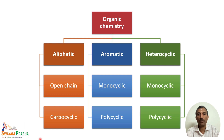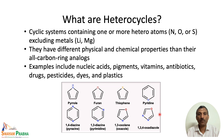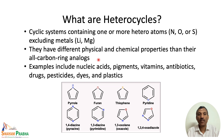Heterocyclic compounds have two major classifications: monocyclic and polycyclic — that is, single ring and multiple rings. Heterocycles are basically cyclic systems containing one or more heteroatoms. The heteroatoms we mainly deal with are nitrogen, oxygen, and sulfur. Other heteroatoms such as lithium, magnesium, silicon, selenium, and phosphorus are also known, but we will mainly focus on nitrogen, oxygen, and sulfur heterocycles. These compounds have different physical and chemical properties than their all-carbon ring analogues.